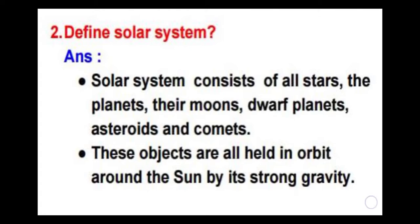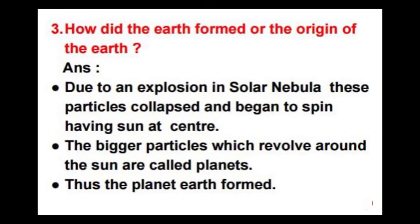Third question: how did the earth form or the origin of the earth? The answer is due to an explosion in a solar nebula, these particles collapsed and began to spin, having a sun at center. The bigger particles which revolve around the sun are called planets. Thus the planet earth is formed.